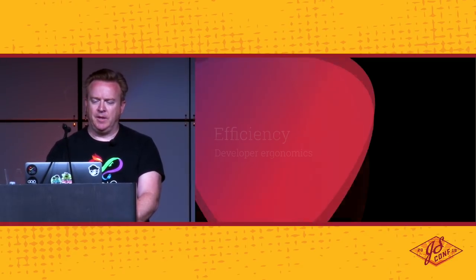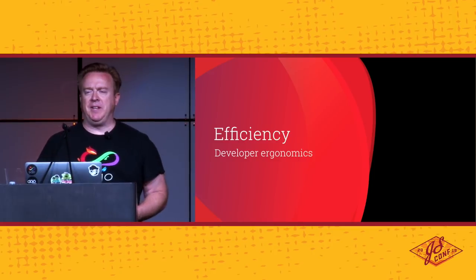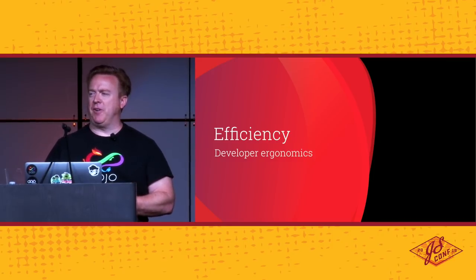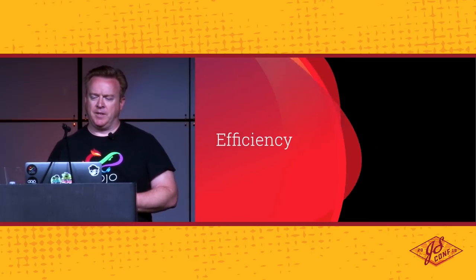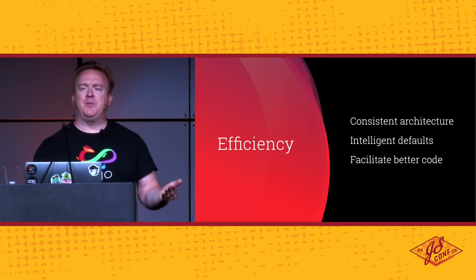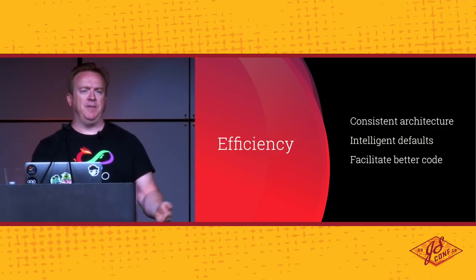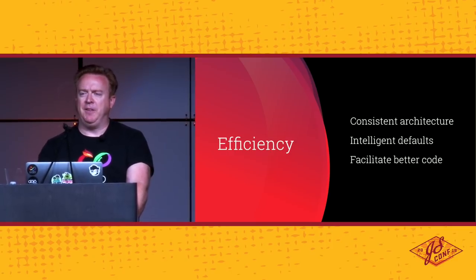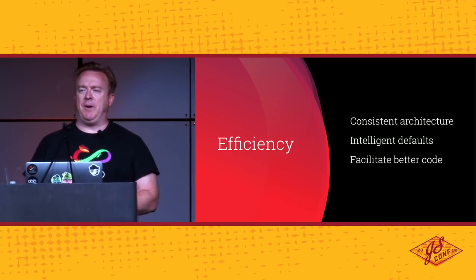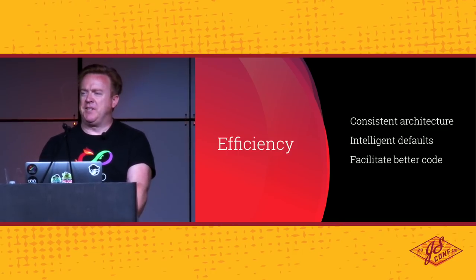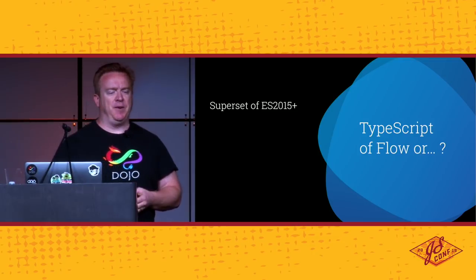Developer ergonomics means many things to many people, but to me it's about doing things the right way out of the box without having to be an expert at every esoteric feature of the language. Something ergonomically friendly has a consistent architecture — it doesn't feel like each package or piece of the framework is different or inconclusive. Give me good defaults out of the box. Don't make me think if I don't have to. If I know better than you, framework author, great — let me do my thing. But by default, don't make me answer 5,000 questions before I get started, and help me facilitate the authoring of better code.